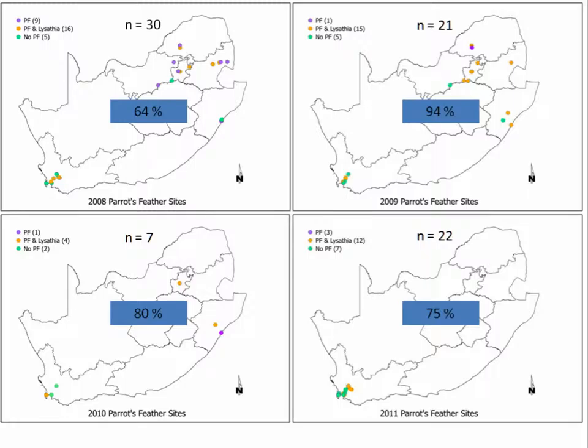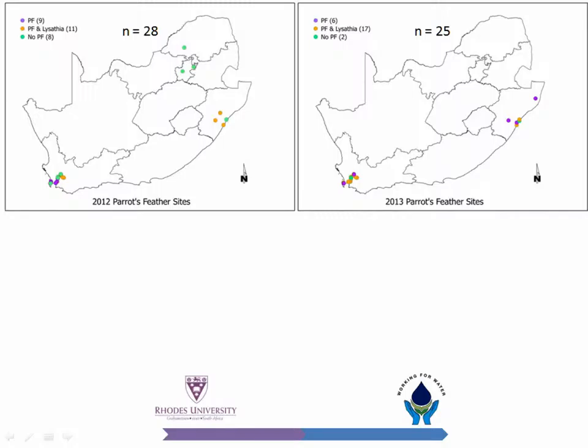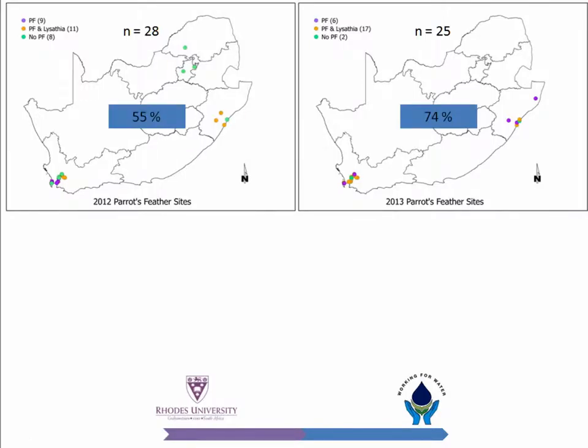I then calculated the percentage of sites where parrot's feather occurred that also had the biocontrol agent. The purple shows where parrot's feather occurred without the biocontrol agent, the orange where the agent was found with parrot's feather, and the green where the weed was not found that year. In most years, the proportion of sites with agents was very good — up to 94%. Looking at the past two years, we visited sites in the mid to high twenties, and still a very good proportion had the biocontrol agent. So far this year there's 74% coverage, and we're still to survey the northern reaches of the country, which will add a few more sites.